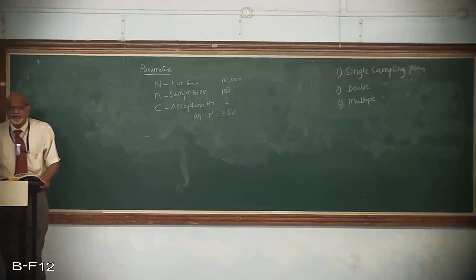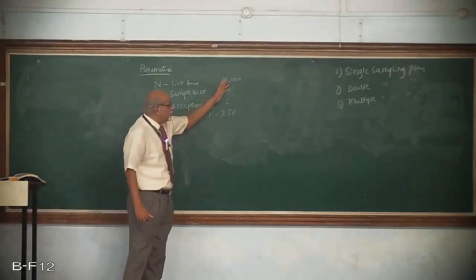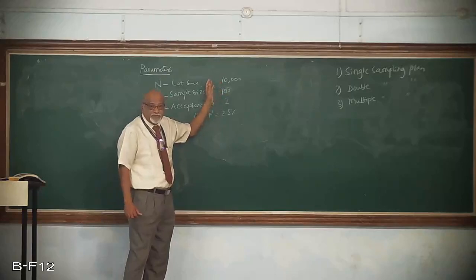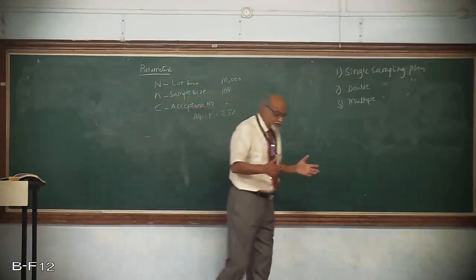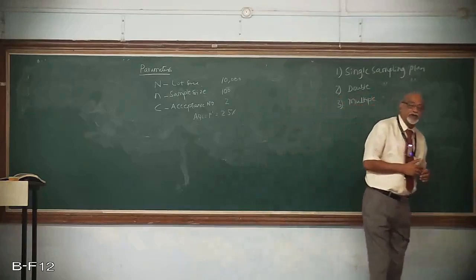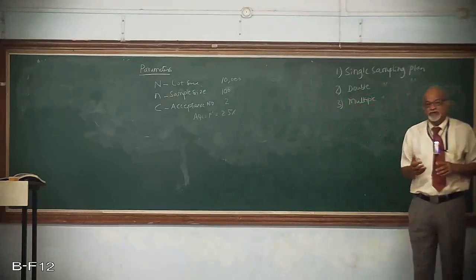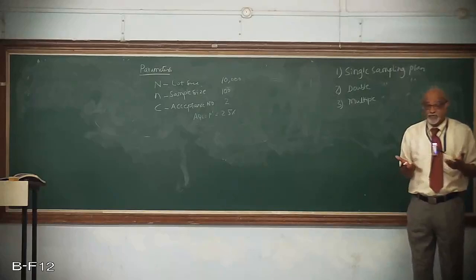Because several lots of 10,000 items are submitted. The quantity is large, that is why these problems arise. If it is only manufacturing of one or two items, there is no problem. But when the quantity is very large, it becomes difficult. What is to be done under such circumstances when 500 lots of 10,000 items each have been submitted?